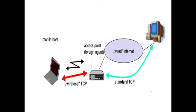In the case of the correspondent host, if a packet is lost, the access point retransmits the packet. But in the mobile host case, if a packet is lost on the wireless link, the mobile host directly retransmits the packet, because the wireless link provides faster round trip time details. So the mobile host directly retransmits the packet to the access point.